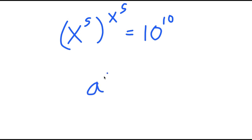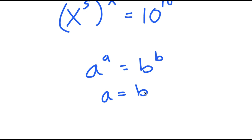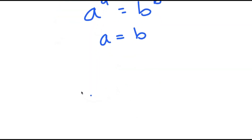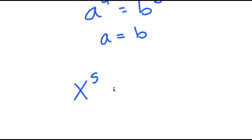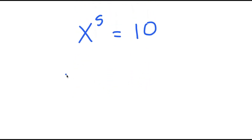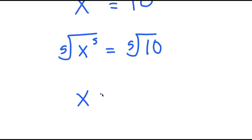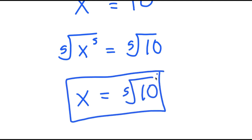Now, if I have something in the form a to the power of a is equal to b to the power of b, this turns into a equals b. So I get x to the power of 5 is equal to 10. And if I take the fifth root on both sides, I get x is equal to the fifth root of 10. So this is my solution to this equation.